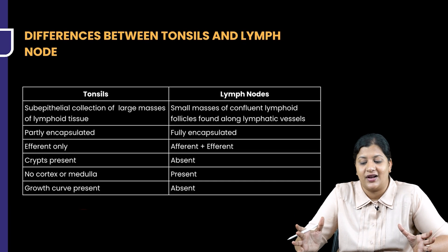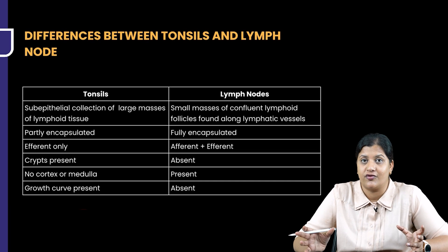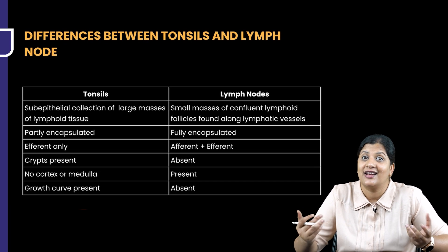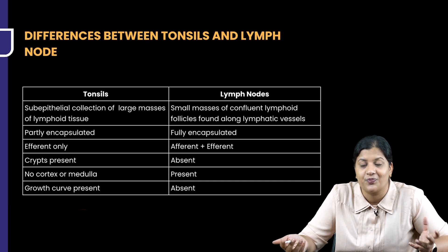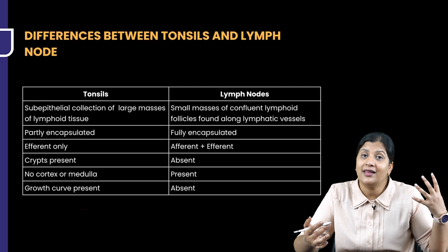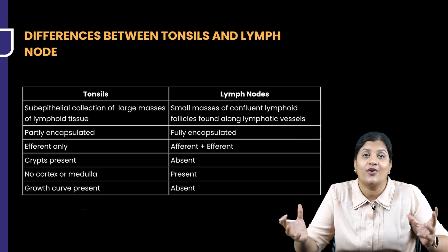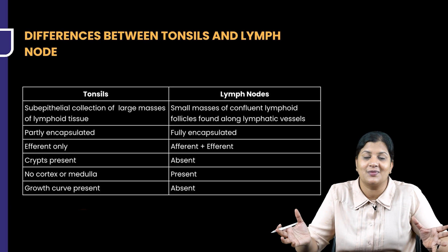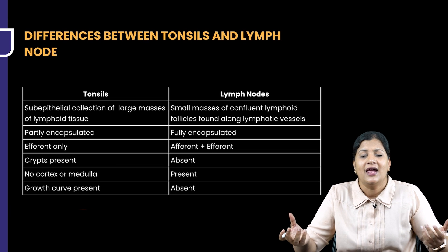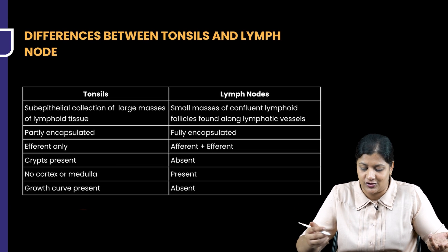Let us understand what are the differences between a tonsil and a lymph node. We've just learned that tonsils are lymphoid tissue. So, are they exactly like a lymph node, or is there a difference between a tonsil and a lymph node in terms of structure or in terms of function?